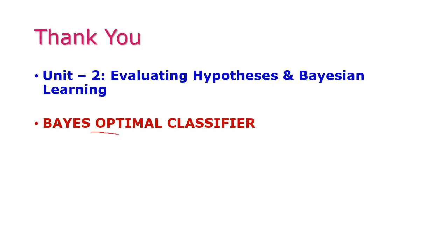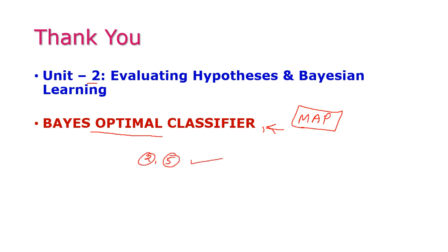The Bayes Optimal Classifier is slightly different from the Bayes Classifier or Bayes theorem, and it is based on the maximum a posteriori hypothesis model. This is another important question from the second unit and you can expect two or five mark questions from the university examination. For more information, please go through your textbook. In the next class, we will see another important topic from the second unit. Thank you.